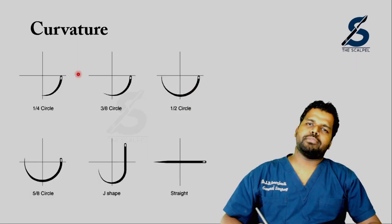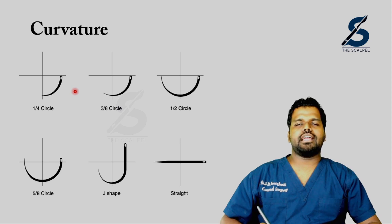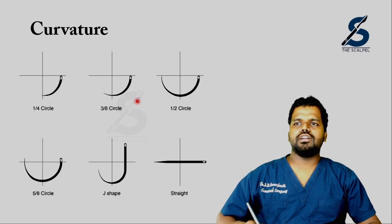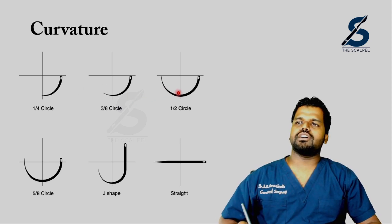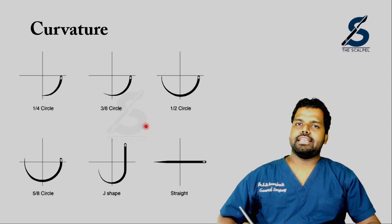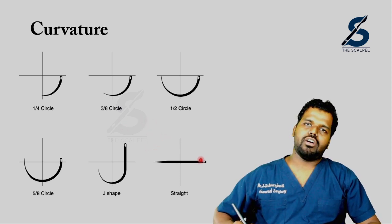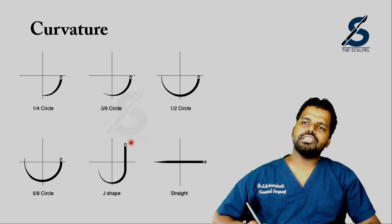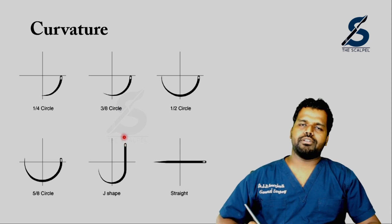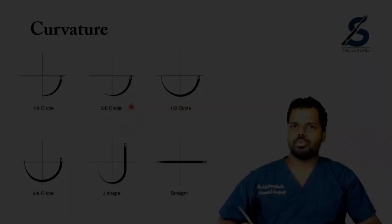This is the classification based on the curvature of the needle. It can be straight, one-quarter of a circle, three-eighths of a circle, half a circle, five-eighths of a circle, or J-shaped. J-shaped needles are preferred where you need to take deep bites — for example, closure of a deep port site.